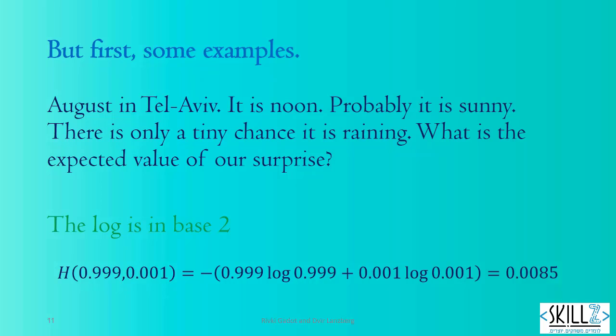August in Tel Aviv. It is noon. Probably it is sunny. There is only a tiny chance it is raining. What is the expected value of our surprise? If the probability of sunny is 0.999, which makes the probability of rain 0.001,